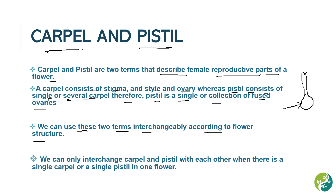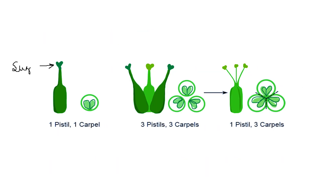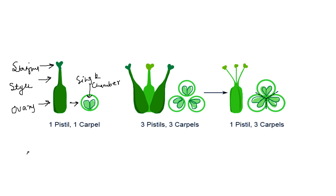We can use these two terms interchangeably according to flower structure, but only when there is a single carpel or a single pistil in one flower. In this diagram, here is the stigma, here is the style, and here is the ovary. When we do a cross-section of this ovary, we see a single chamber or compartment. So this can be considered a single unfused carpel, or we can say it is a simple pistil.